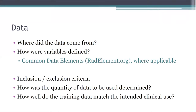Among the other things to think about when looking at data: what were the inclusion and exclusion criteria, and if certain patients were excluded, why? How did the authors determine the quantity of data to use — did they do a power analysis to determine an appropriate number of examinations to assure statistical validity? For those in clinical practice, it's important to understand how well the training data match the intended clinical use of the AI model — and critically, that the test set models the range of patients expected in actual practice.